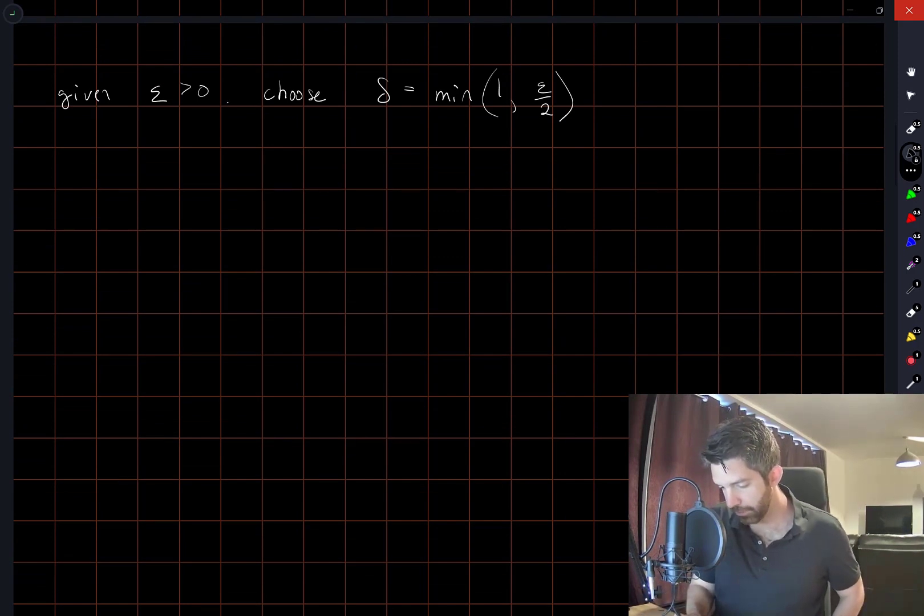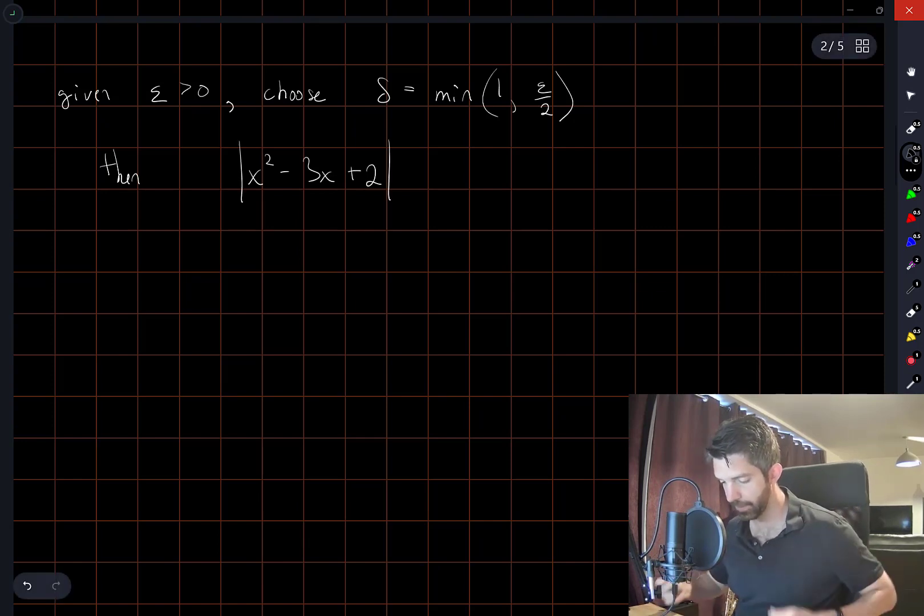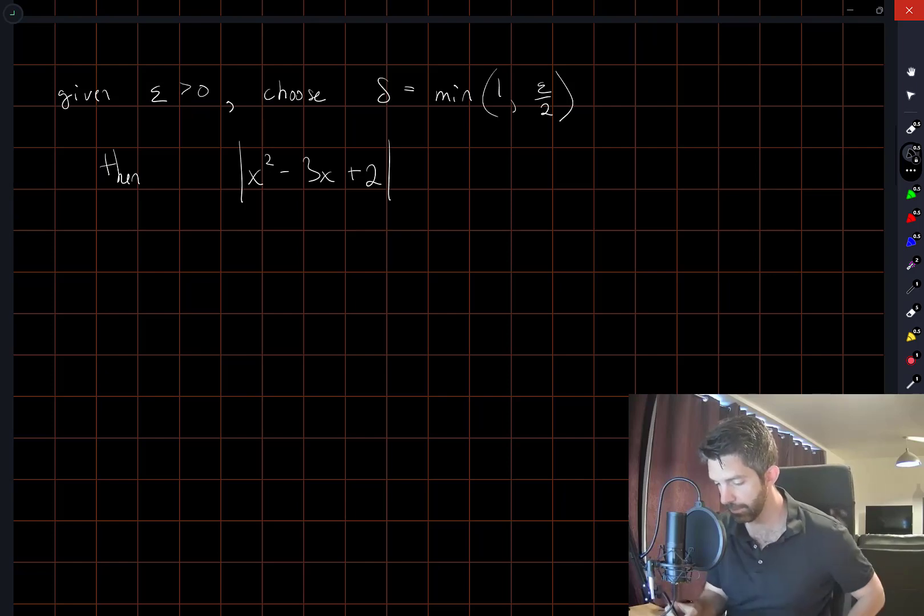So given any epsilon greater than 0, I'm going to choose delta to be equal to the minimum of 1 and epsilon over 2. This is the quantity that we're kind of concerned with bounding by epsilon. So we know already this factors as x minus 1 times x minus 2. Okay.